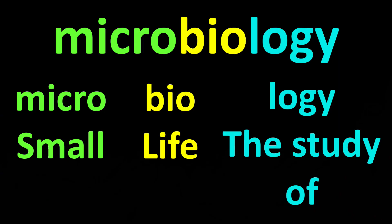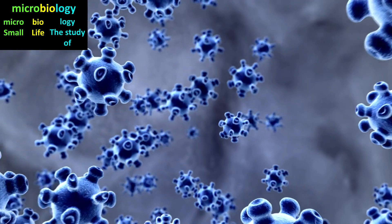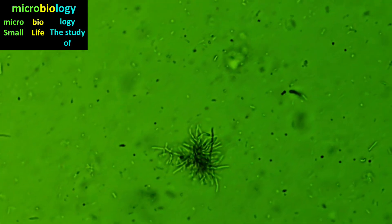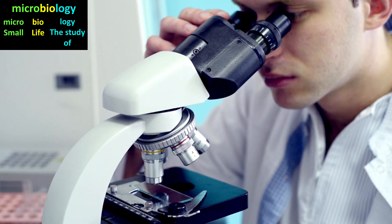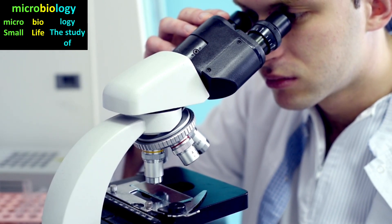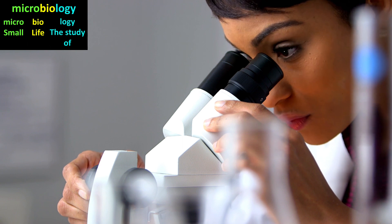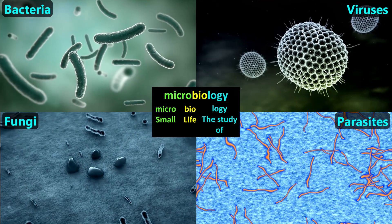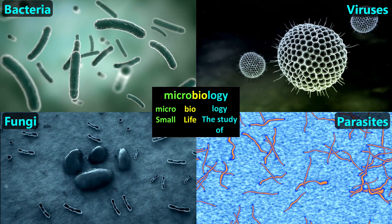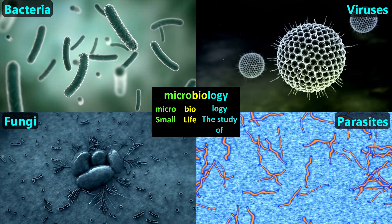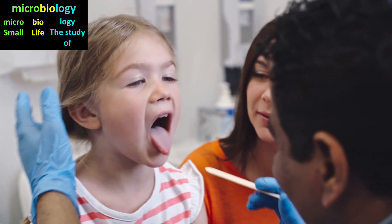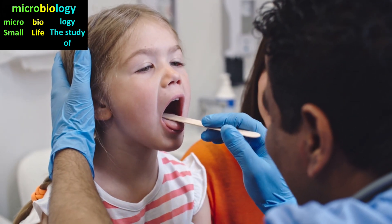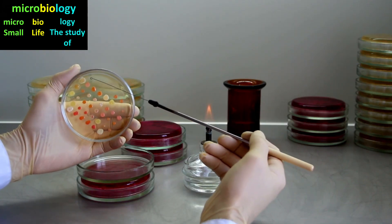The word 'microbiology' is made of three word parts. The first is 'micro,' which means small. Microbiology is another specialty within the broader field of biology — it is the study of small life forms. Individually, these organisms are too small for us to see with our unaided eyes, so we use microscopes and other instruments to see them. They include bacteria, viruses, some fungi, and small parasites. Microbiology is very important in healthcare because many of these organisms can make us sick with an infection. Microbiologists study how these organisms cause infections and help find ways to kill them.